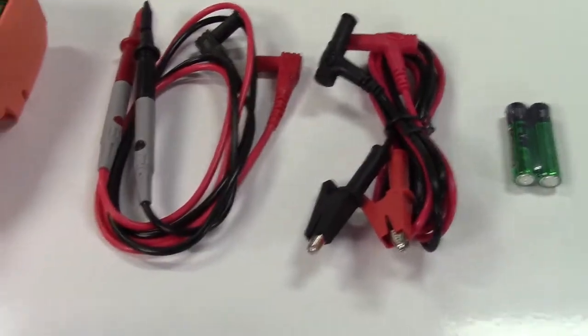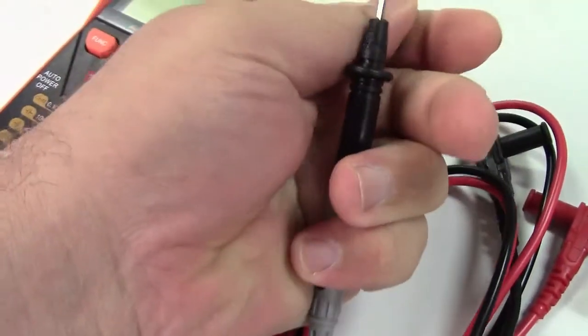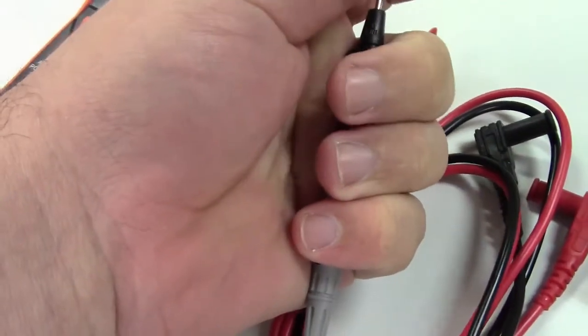Here is the multimeter itself right here. And they give you two sets of leads here. These are your standard probe type ones. This pulls off and gives you your probe right there.